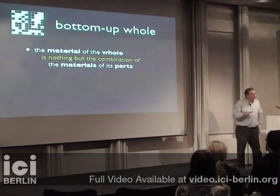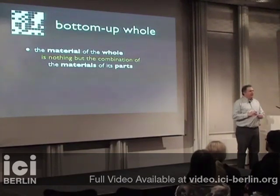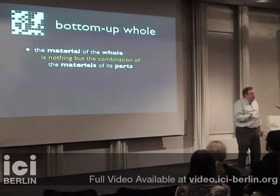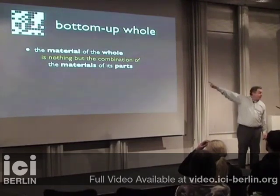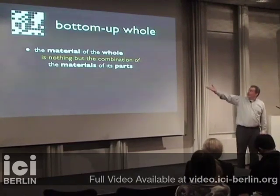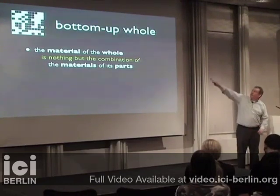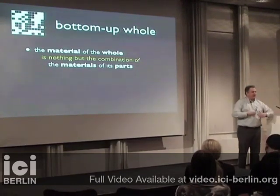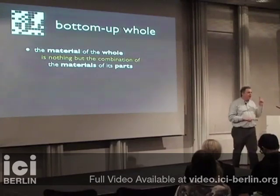A bottom-up whole is a special kind of whole. It is bottom-up in four crucial respects. The first is that the material of the whole — the stuff that it's made up out of — is nothing but the combination of the materials of its parts. So if there were some whole in that picture, the stuff it's made up out of is nothing more than the stuff the parts are made up out of, and the way they're arranged.